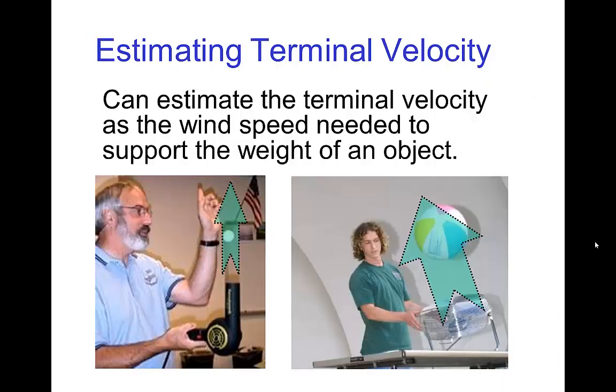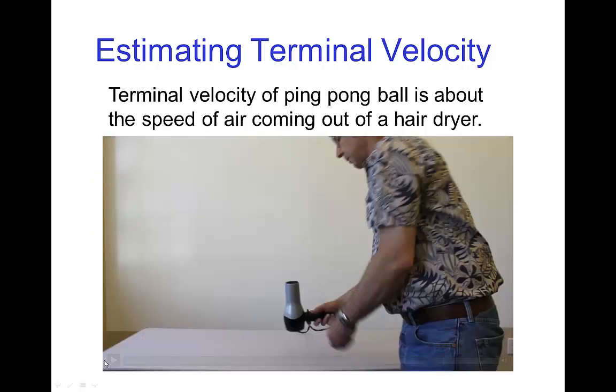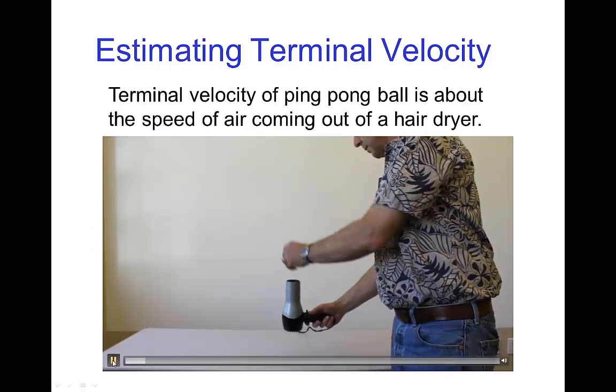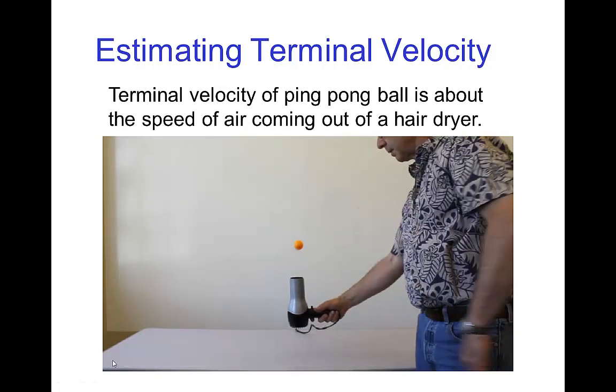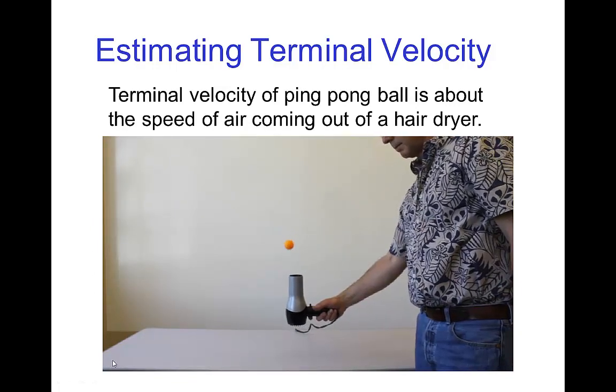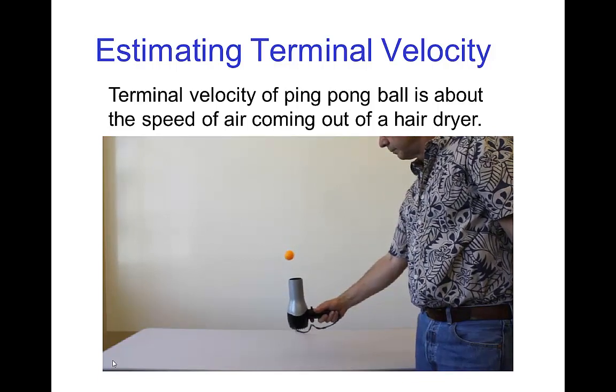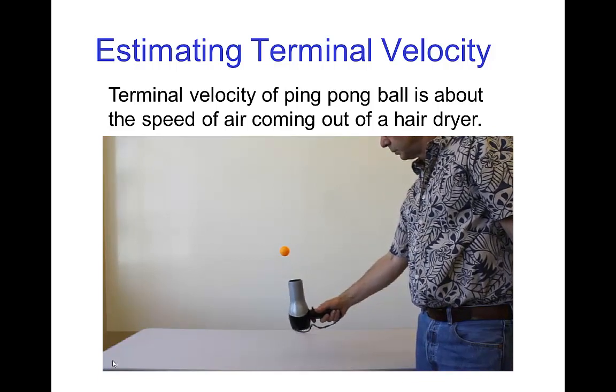You can estimate the terminal velocity for an object if you can estimate the wind speed that would be needed to support it. So here's a little example with a ping pong ball. You see that the hair dryer is blowing at a speed, air speed that is fast enough that it is supporting the ping pong ball.